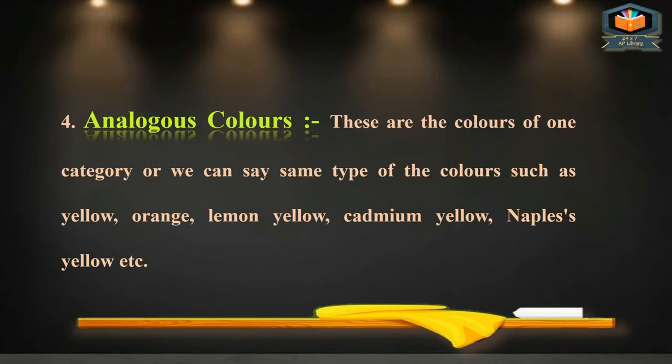Analogous colors are colors of one category or the same type. For example: yellow, orange, lemon, cadmium yellow, and Naples yellow are analogous colors — they are all the same kind of color.